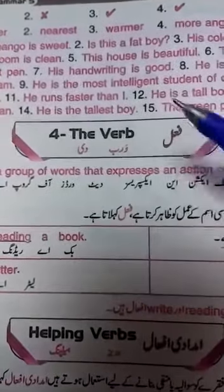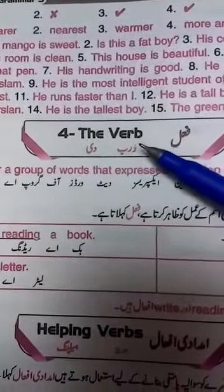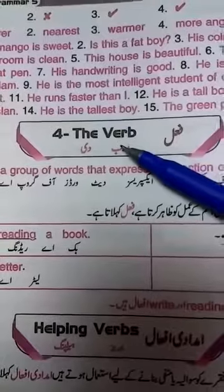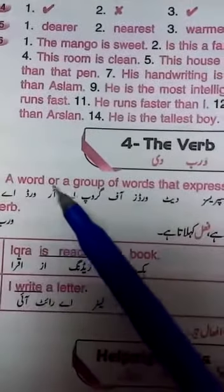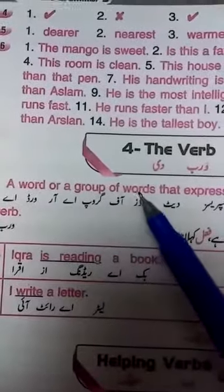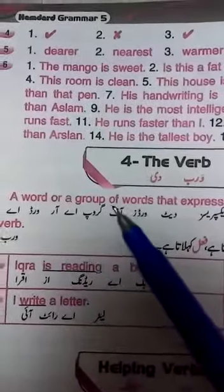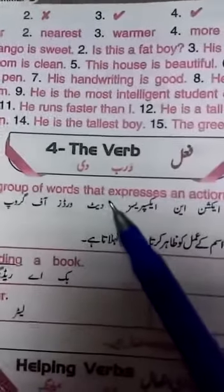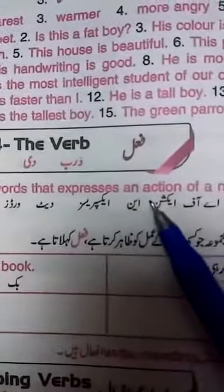Our first definition is the verb. What is the verb? Any action word. Let's read it: a word or a group of words, like a love or an expression, that expresses an action.